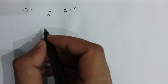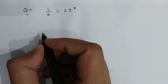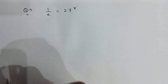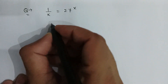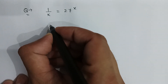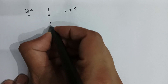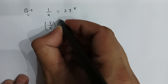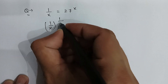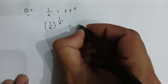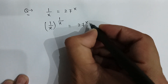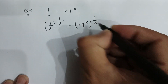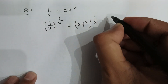The question is: 1 divided by x is equal to 27 to the power x. We can rewrite it as 1 divided by x, to the power 1 divided by x, is equal to 27 to the power x, whole power 1 over x.